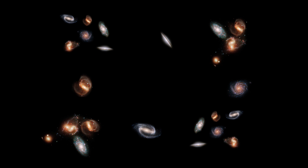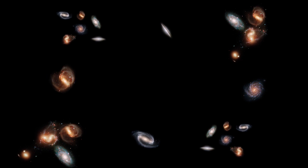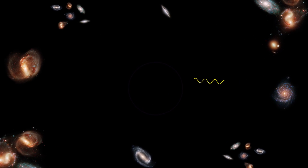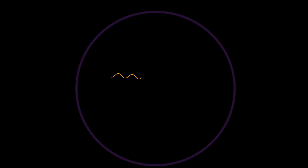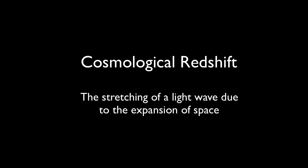And it's the expansion of space that makes it look like galaxies, superclusters actually, are all receding away from one another, like ants on an inflating balloon. The stretching of light due to the expansion of space we call the cosmological red shift.